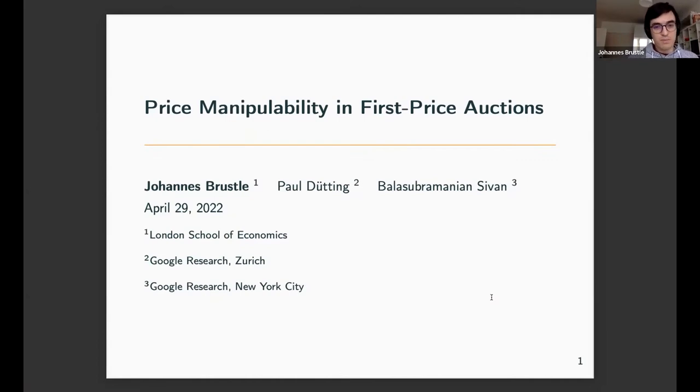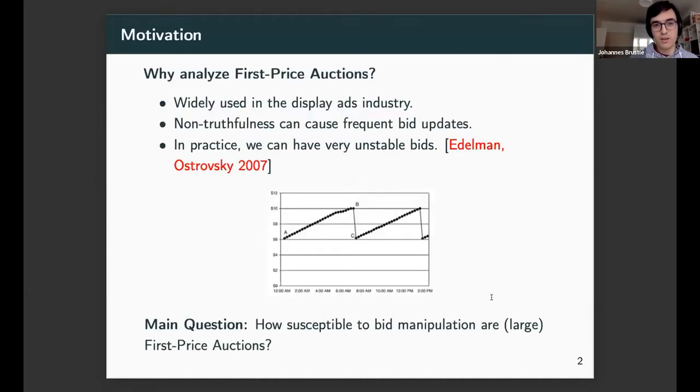I want to talk today about price manipulability in first-price auctions, joint work with Paul Ditting and Paula Subramanian Sieb. Why do we look at first-price auctions? As many have mentioned, they've seen recent widespread use in the display ads industry, although we know they're non-truthful. This non-truthfulness in theory can cause frequent bid updates and other suboptimal behavior, but this is not only in theory but also in practice.